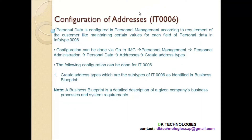Address info type number is 6. It stores permanent address, temporary address, and other details, depending on company requirements. Some companies only want to maintain permanent and emergency addresses and not temporary. It totally depends on what you capture in the business blueprint. The business blueprint is a document that captures what is required in the system based on the company's requirement. Once the business blueprint is signed off, you start configuration — you don't jump directly into configuration without prior client discussion and documentation.